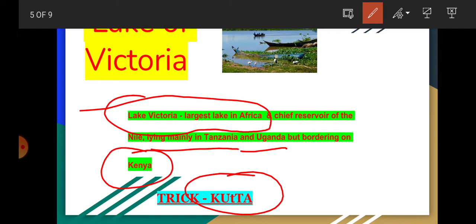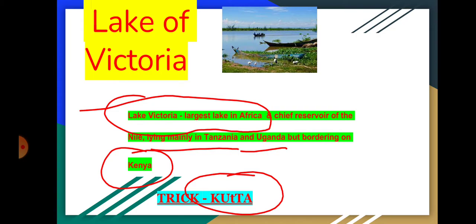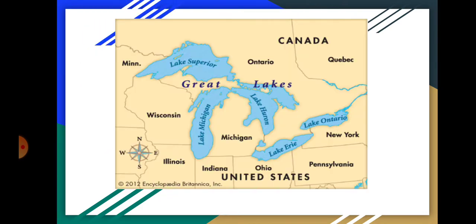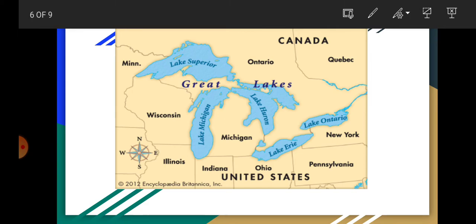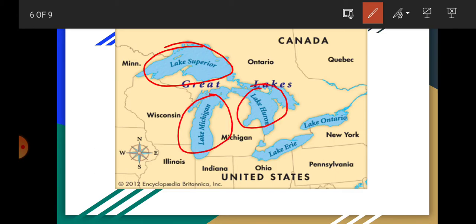Let's move to the next group of lakes. These are very important — UPSC in 2002 or 2003 asked questions on these lakes, and recently Lake Superior was in the news. Have a look at the map — it's North America. The five lakes are: Lake Superior, Lake Michigan, Lake Huron, Lake Erie, and Lake Ontario.